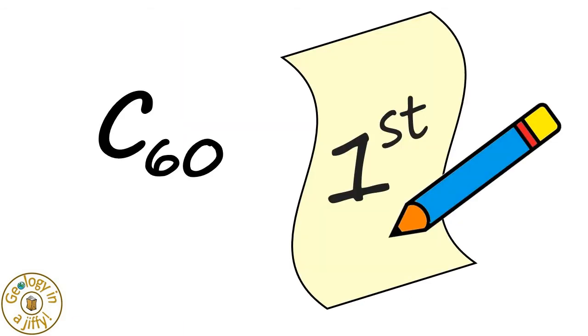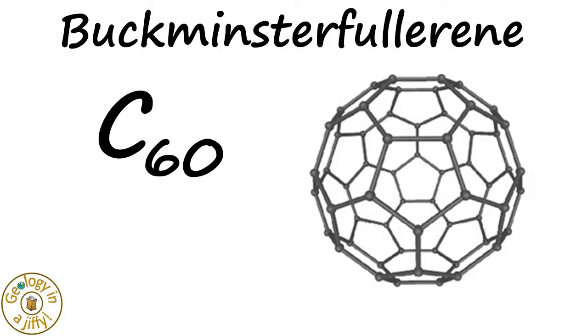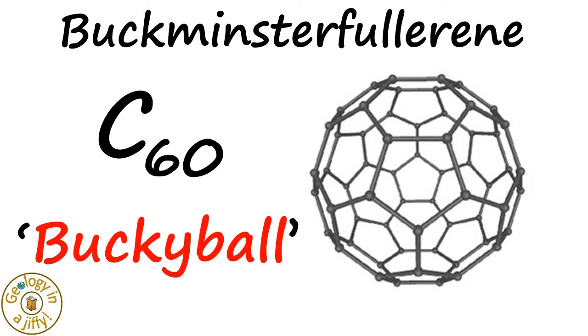The first fullerene discovered was the C60 molecule, a hollow, spherical shaped structure nicknamed the Bucky ball, its surface made up of 20 hexagons and 12 pentagons.